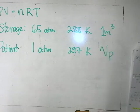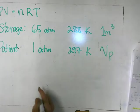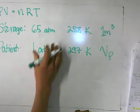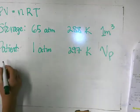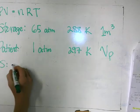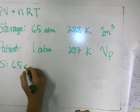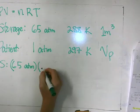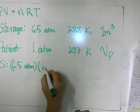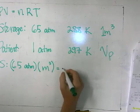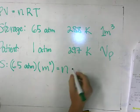So how do we use this information? Let's just plug this stuff in and see what we get. For storage, we have 65 ATM times volume — one cubic meter — equals N, the number of moles, times the ideal gas constant R, times the temperature, which is 288 Kelvin.